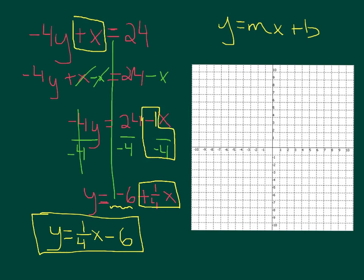The y-intercept is at -6. Then you have to use your slope to graph. Up 1 over 4. Up 1 over 1, 2, 3, 4. Then go the other way, down 1 left 4. And connect the line.